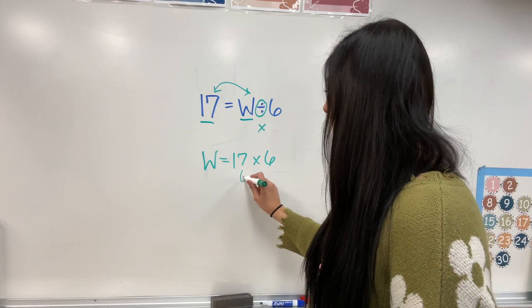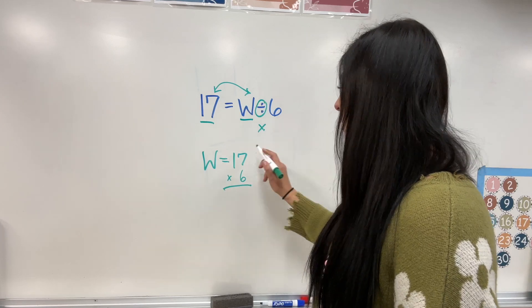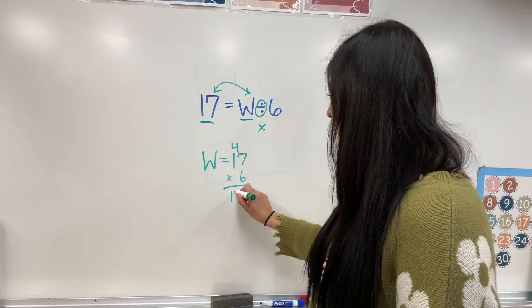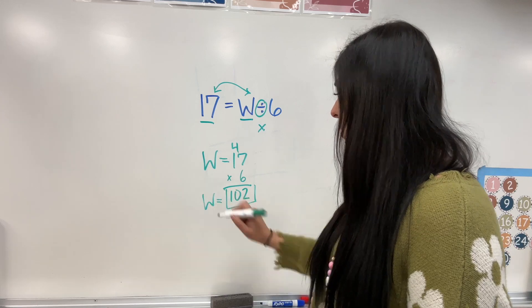Now, 17 times 6. I'm going to make it vertical. That way, I could do it easier in my brain. Now, 7 times 6 is 42. 6, 7, 8, 9, 10. Now, W equals 102.